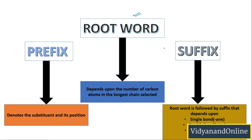Second, you check what the suffix will be. The suffix tells you whether there is a single bond — in which case '-ane' comes at the end — a double bond, in which case '-ene' comes, or a triple bond, in which case '-yne' comes. If there is a functional group, for example alcohol, then '-ol' comes at the end, replacing the '-e'. If there is an aldehyde, you write '-al', and so on.